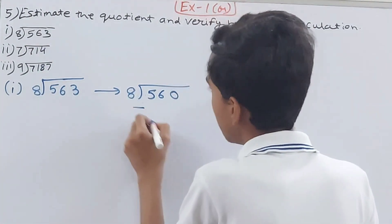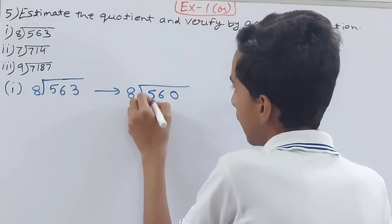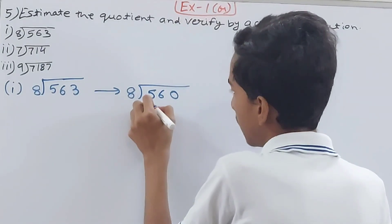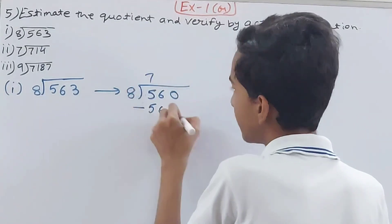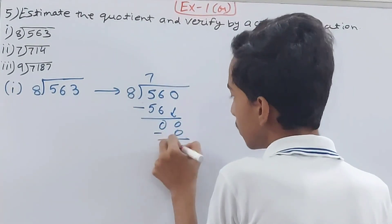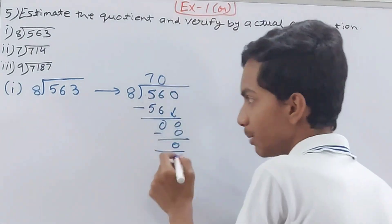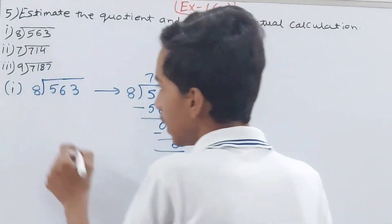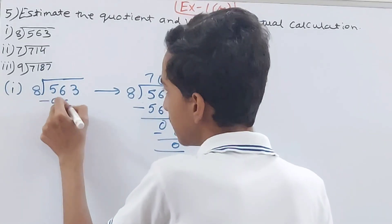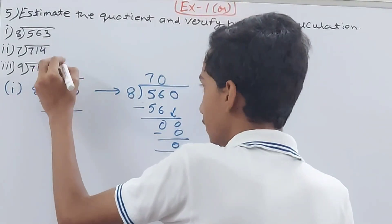For the estimated: 560 ÷ 8. We have 56 here, 7 times. Bring down the 0, minus 0, so 0. Estimated quotient is 70. For the actual: 563 ÷ 8. Again 56, 7 times.